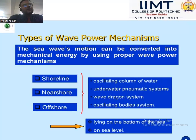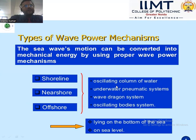This is a type of wave power mechanism. Sea wave motion can be converted into mechanical energy by using proper wave power mechanisms. These include shoreline devices, near-shore devices, and offshore devices — such as the oscillating water column, underwater undulating systems, wave dragon systems, and oscillating body systems.